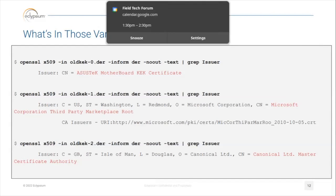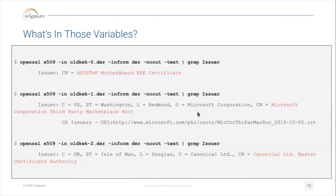Canonical also has a certificate in there so that we can boot Linux software. At a very high level, the various Linux distributions created one small piece of software called shim — Microsoft signs shim, and shim is responsible for loading the second-stage bootloader, which is typically GRUB. This was a good way to reduce your attack surface and allow all the Linux distributions to more easily participate in Secure Boot.